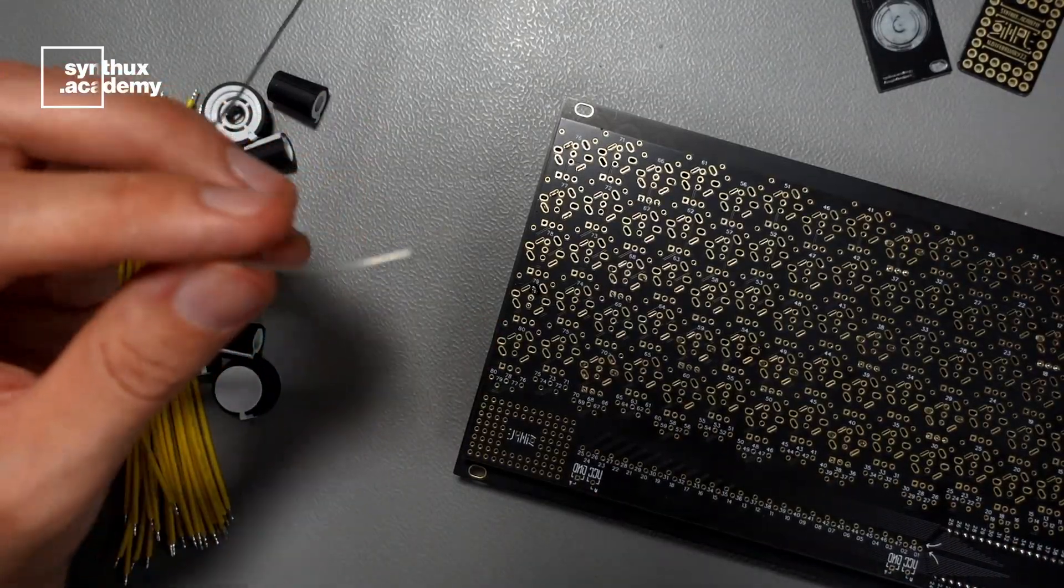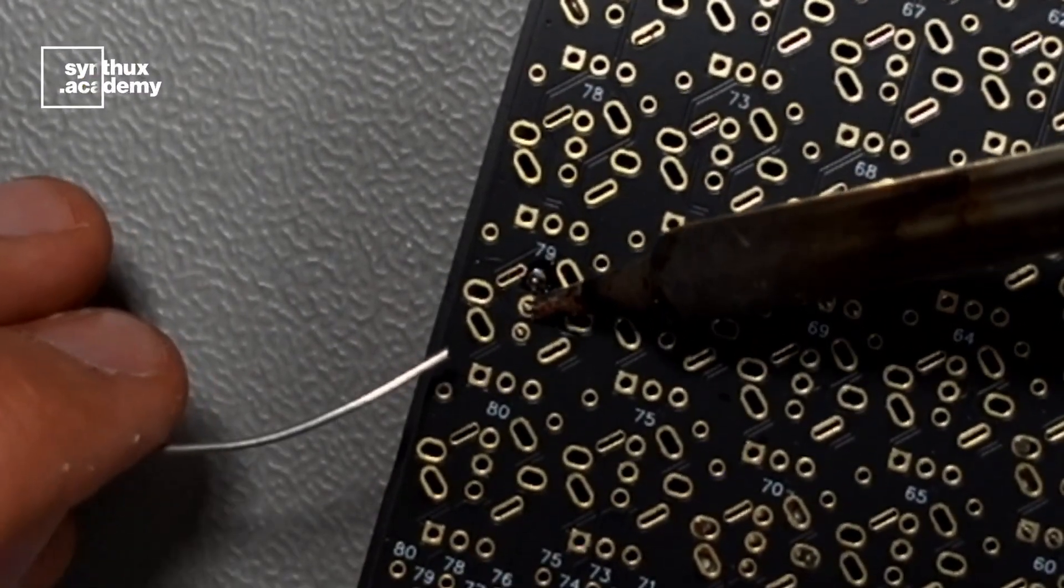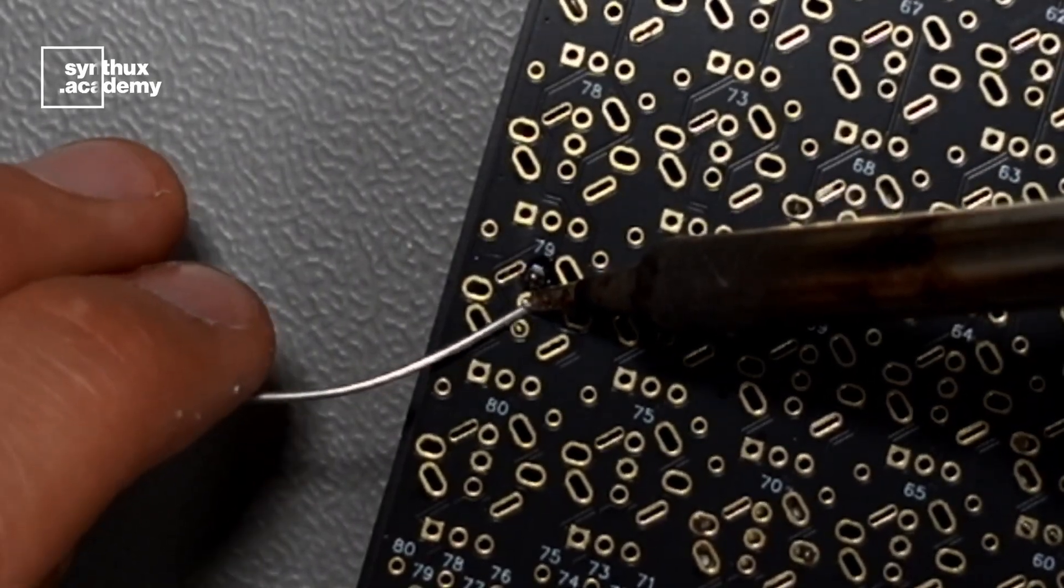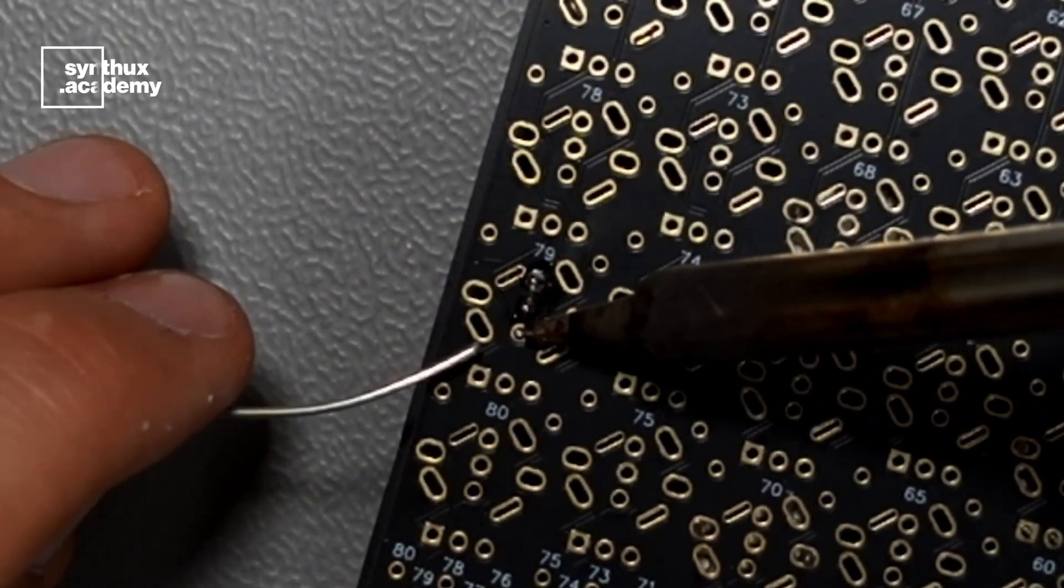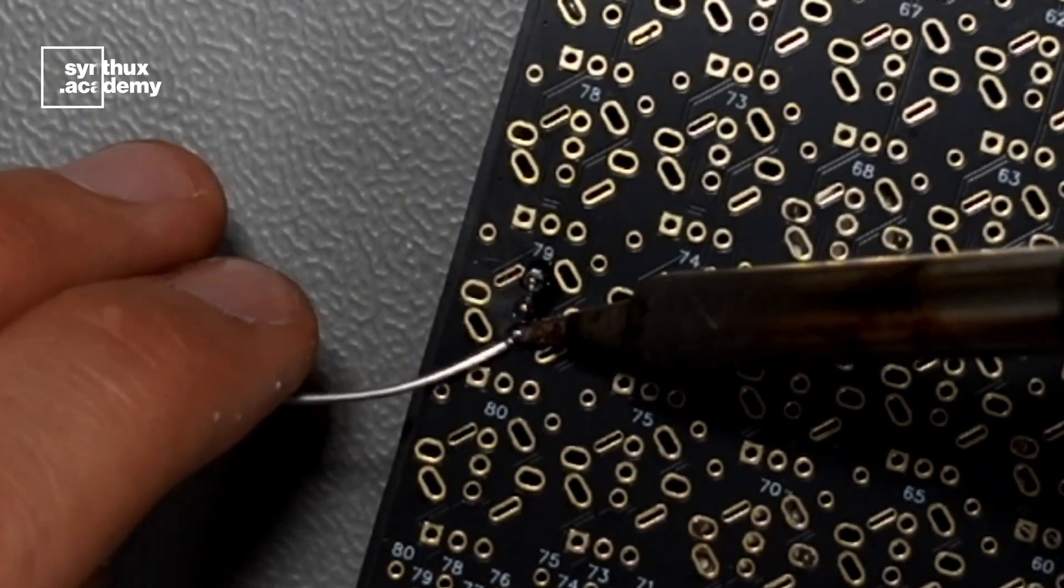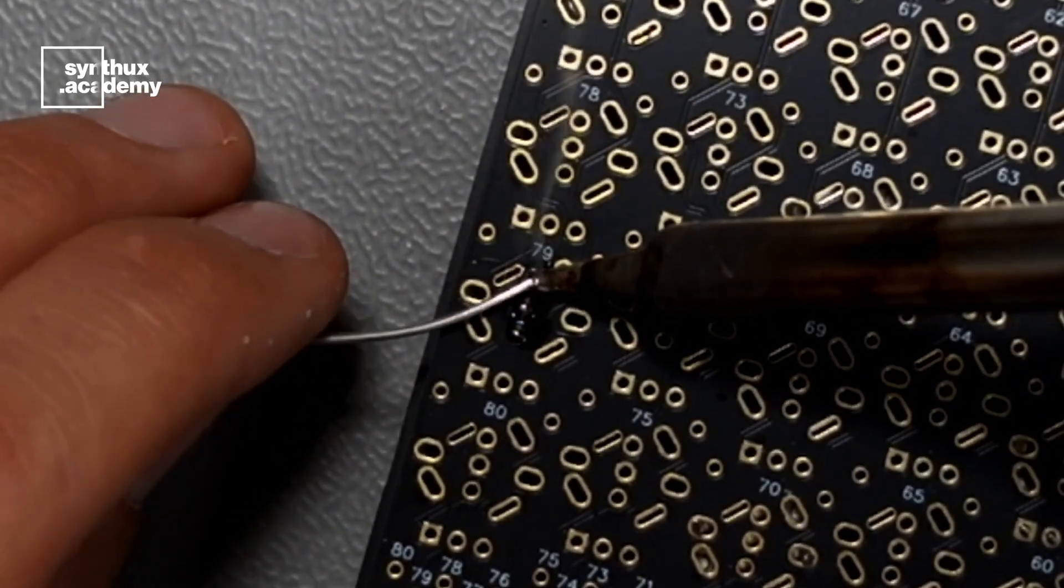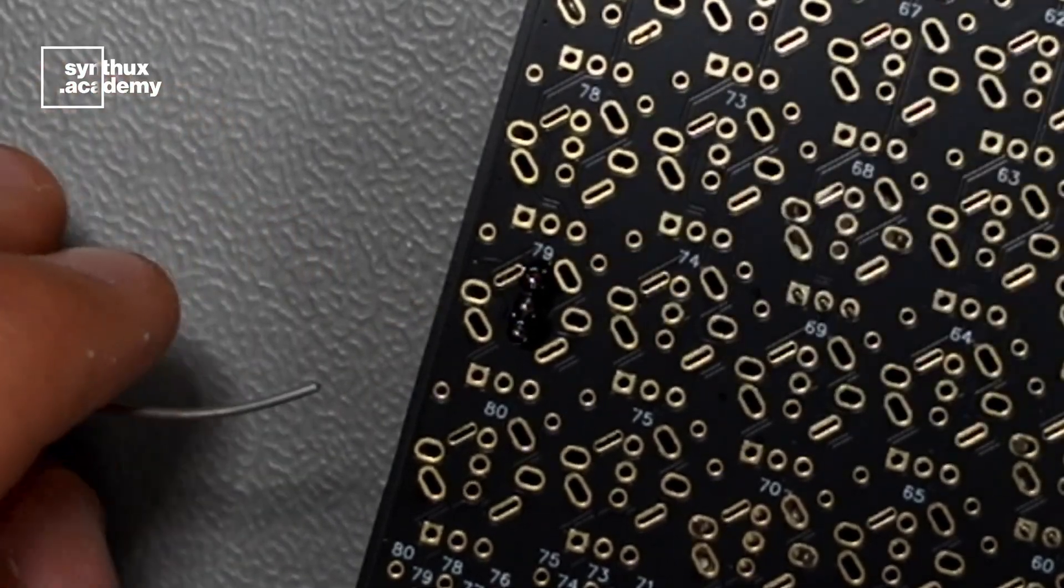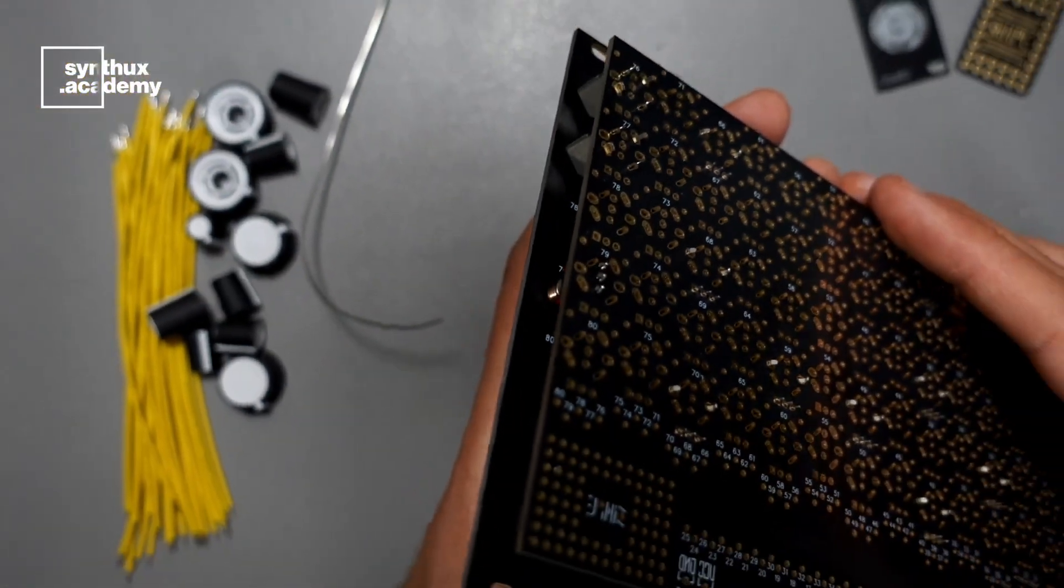Now we can continue to solder the other two pins. And add a touch of solder on the one that we started with. Now let's quickly go through the jacks and the potentiometers. We can solder these quickly.